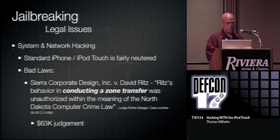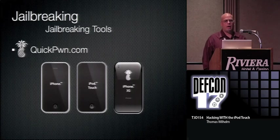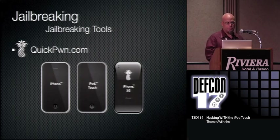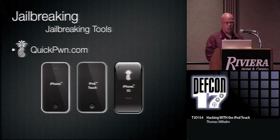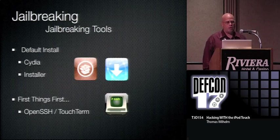Now that we've talked about legal issues, let's talk about the actual tools. For my iPod Touch — the first generation — I used QuickPwne. These are the different phones and devices it currently supports. When you do the jailbreak, what gets installed originally is Cydia and also a program called Installer. And the first thing you'll want to drop on there is OpenSSH in order to be able to communicate directly with the operating system.